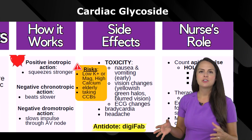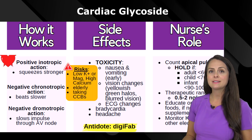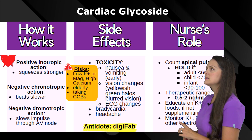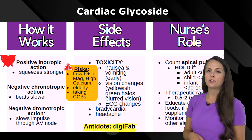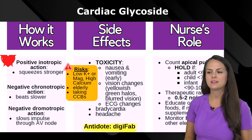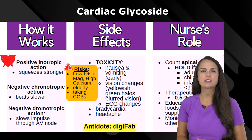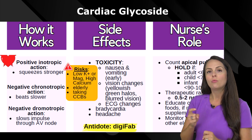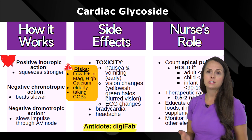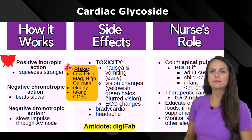So how does this medication work? There are three things to remember because chances are you may see it on a pharm exam. The first thing is that it's going to have a positive inotropic effect on the heart. When we're talking about inotropic, we're talking about the force of contraction, and because it's positive it means the heart's contractions are going to be stronger, which is something we definitely need if our patient has heart failure or cardiogenic shock.